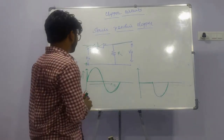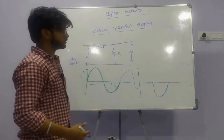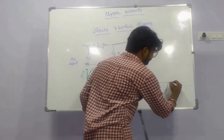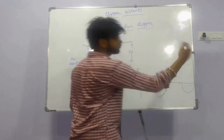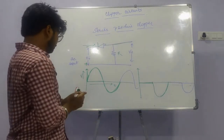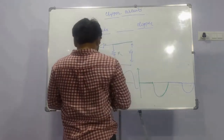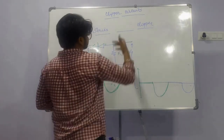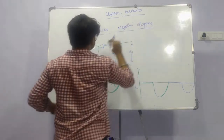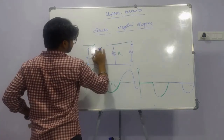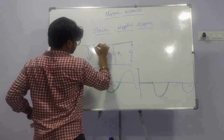When the entire AC signal is given in oscillations, the same process continues. Now moving on to the series negative clipper — here we just replace the diode by inverting it.